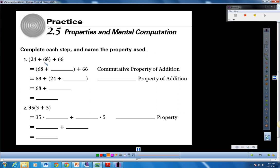So we're going to complete each step and name the property that we used. So to get from 24 plus 68 plus 66 to 68 plus a value, I'm not sure what that is yet, plus 66. So what changed here? Well, I can see that the 68 used to be second, however, it made a flip. This is now 68 plus 24. I know the 24 had no other place to go. And 68 plus 24 plus 66, I used the commutative property to get there. Look at that, they list that one for me.